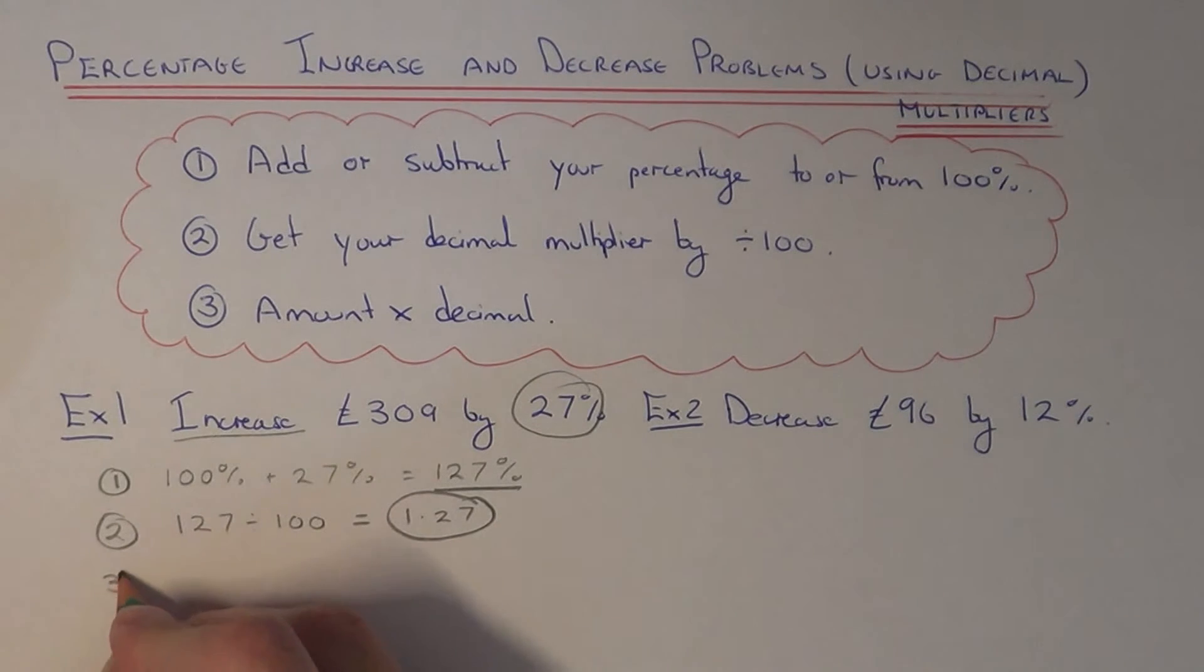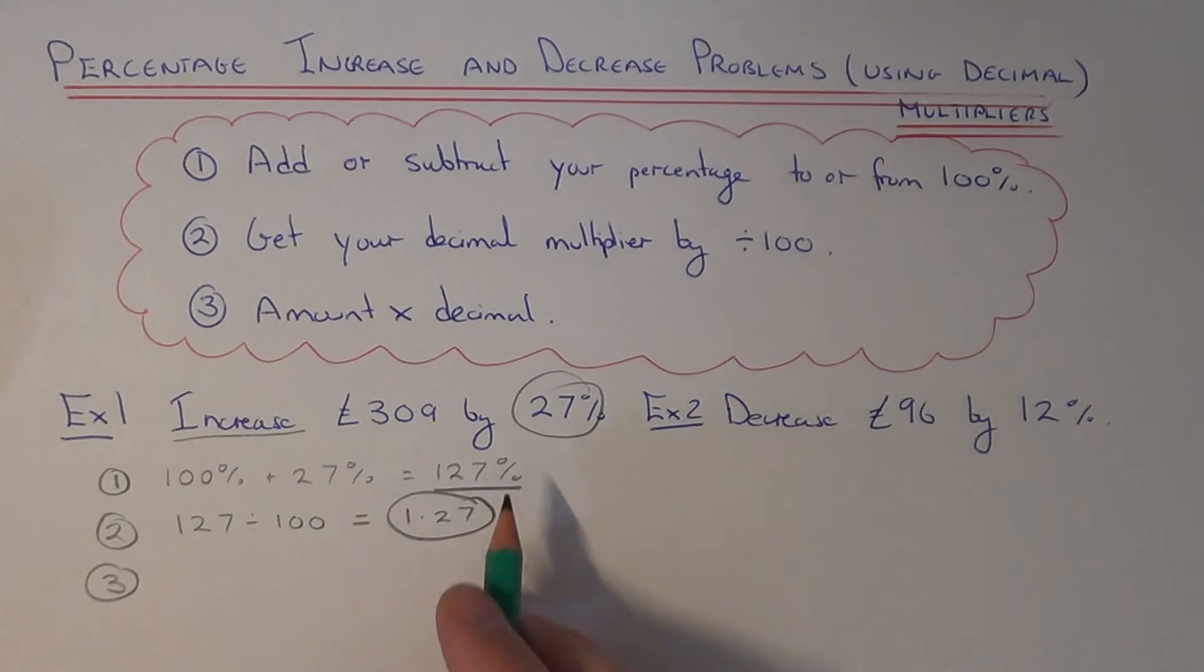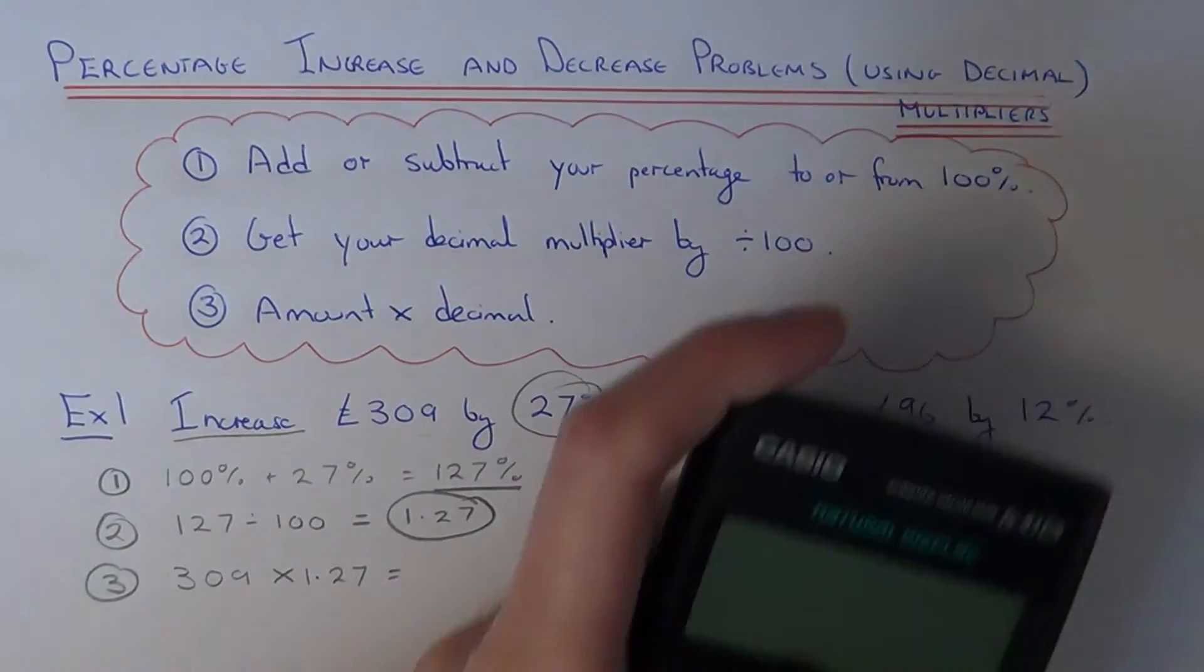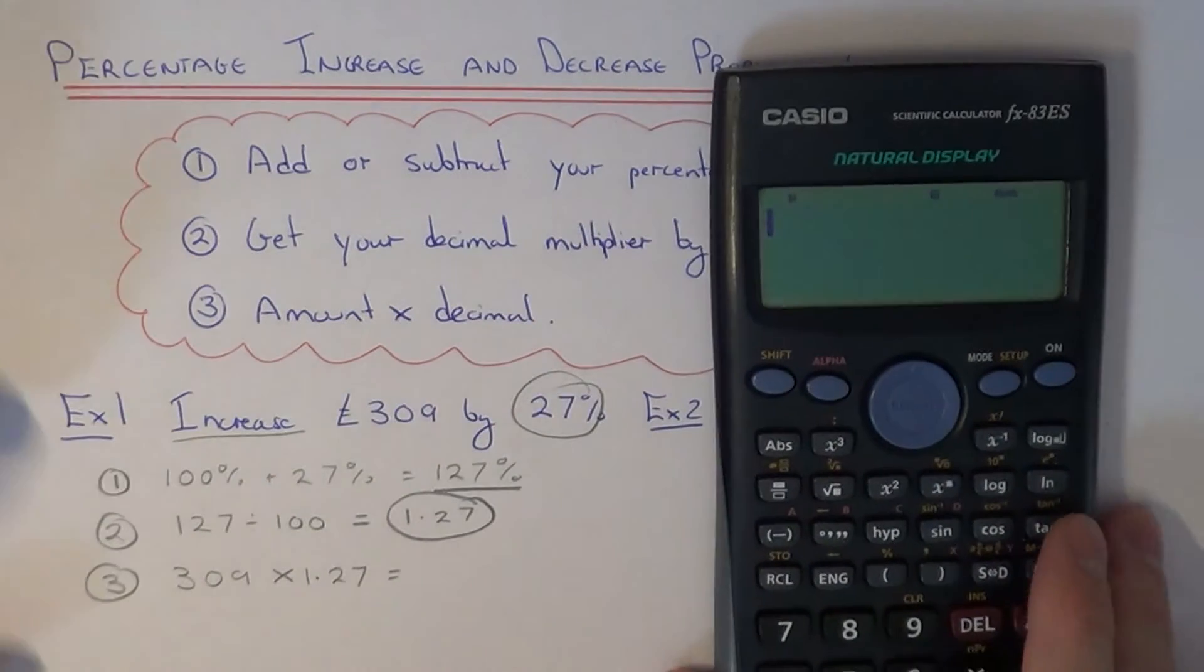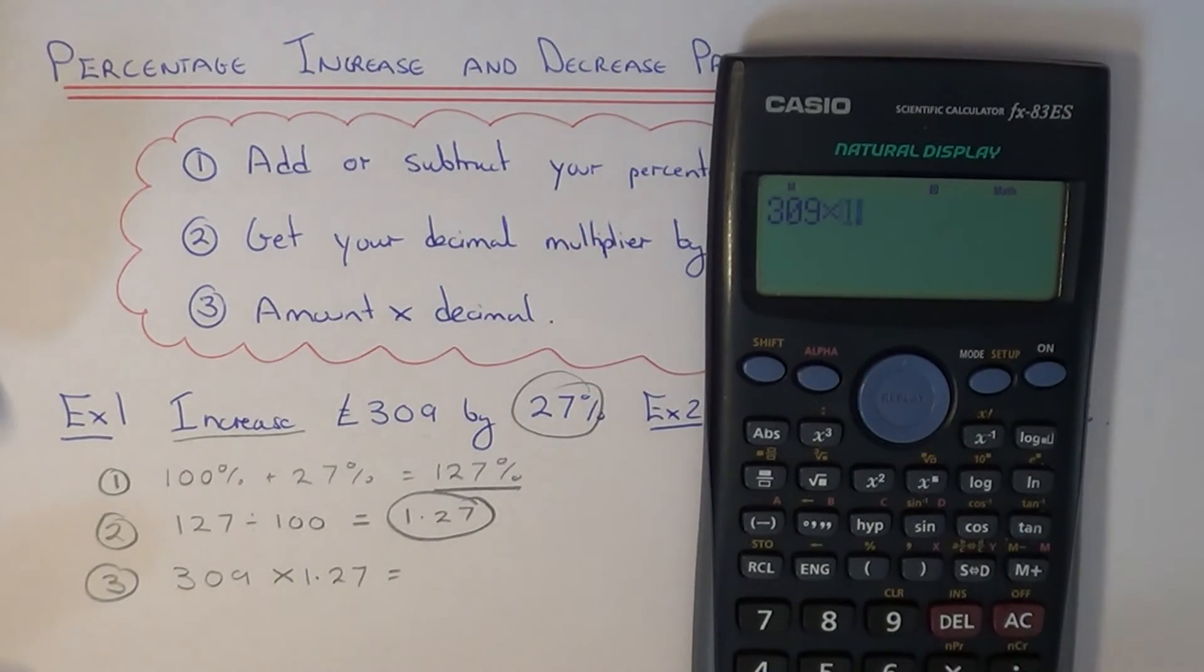So my third and final step is to multiply the money by our decimal multiplier. So we do 309 times by 1.27. If you just get your calculator now and work that one out, 309 times 1.27, we get an answer of £392.43.